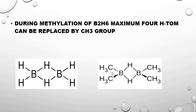The second justification: during methylation of diborane, there are totally six hydrogen atoms in diborane. But during methylation, only four hydrogen atoms can be replaced by a methyl group. The two hydrogen atoms that are involved in banana bonding cannot be replaced by a methyl group. That shows there is a different kind of bond — a banana bond — between boron, hydrogen, and boron.